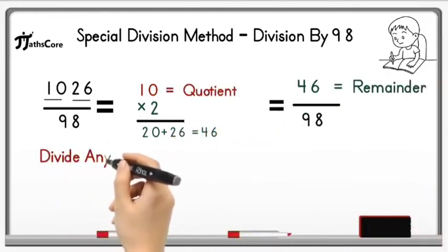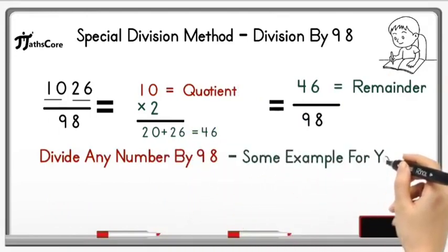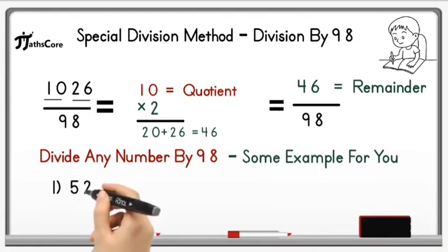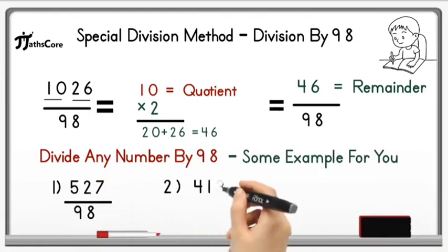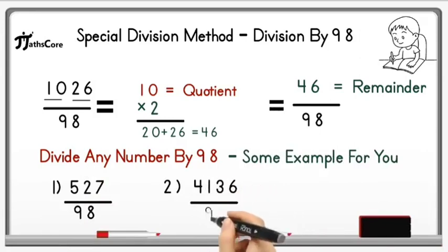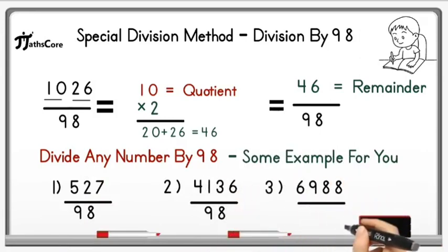So you can divide any number by 98 by using this Vedic math technique and here some examples for you. First one is 527 divided by 98, second one is 4136 divided by 98, third example is 6988 divided by 98. Solve this example by using this technique and you will get answer within few seconds. Thank you.